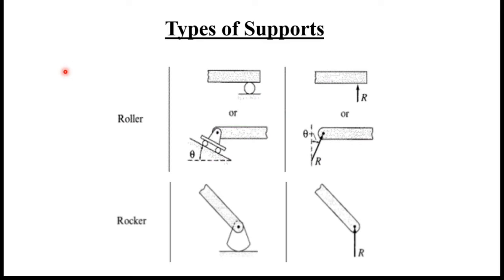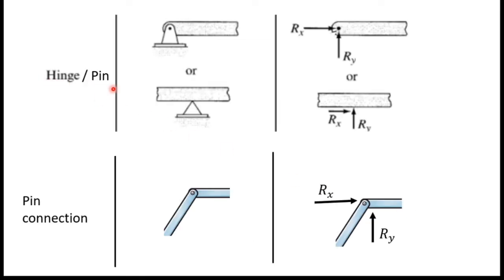First of all, we have to know the types of supports and their support reactions. The first type is roller support. If we have a roller support, we mark one vertical force component. But if the roller is on a sloped plane, we mark the reaction force perpendicular to the plane. For a rocker support, we also mark one vertical force component.